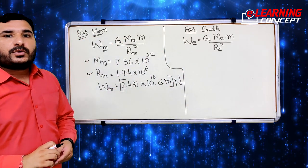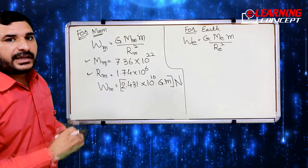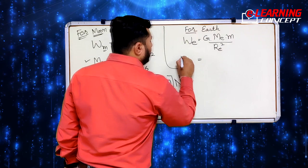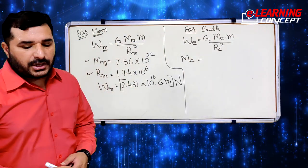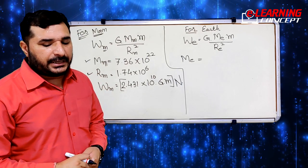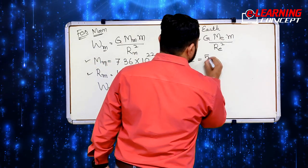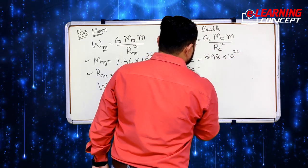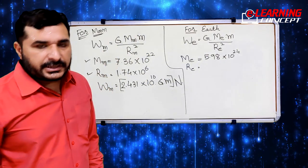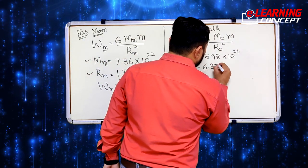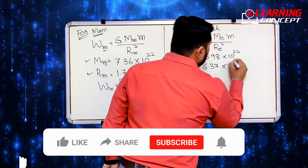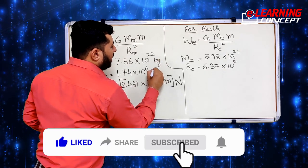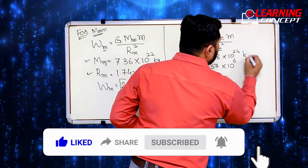Similarly, for Earth we will substitute its mass and radius values. The mass of the Earth is given as 5.98 × 10²⁴ kg and the radius of the Earth is 6.37 × 10⁶ m. Mass is in kilograms and radius is in meters.